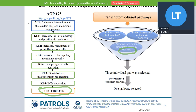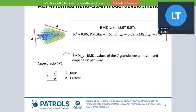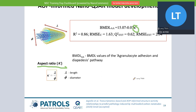The model here is much more simple — they look at the benchmark dose and work out a regression. This is a very nicely fitted regression of the benchmark dose as a function of a descriptor kappa. Kappa, interestingly, is defined as the aspect ratio. The benchmark dose here is the value for granulocyte adhesion and diapedesis — that is basically the response. They got a very good correlation because the R-squared goodness of fit is pretty good.